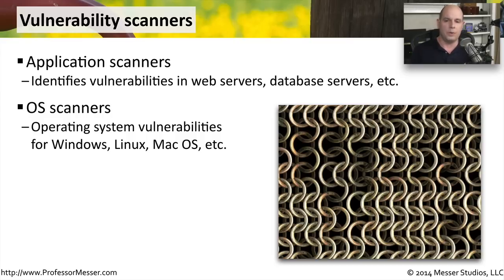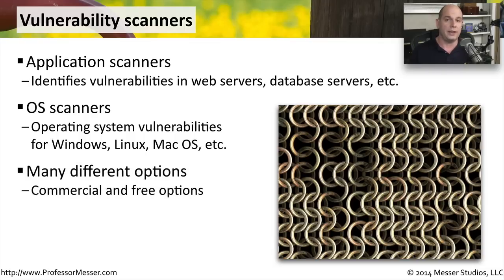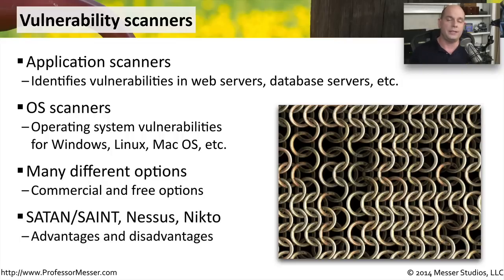There are a lot of different options for both application scanners and operating system scanners. Certainly commercial scanners are available, and there are also a number of open source scanners — it just depends on what you would like to scan and how much information you want to gather. One of the scanners that's been around for a very long time is called Saint; it used to be called Satan. One that is licensed for home use absolutely free is Nessus, and Nikto is a very good application vulnerability scanner. All of these have advantages and disadvantages, but running one of these scanners will help you understand exactly how much information you can see by simply scanning all of the devices on your network.